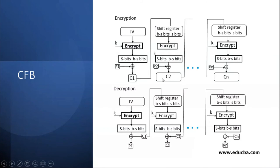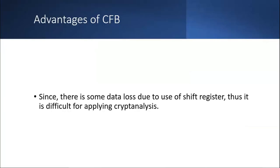The reverse happens in decryption. An advantage of CFB is that there is data loss due to the use of the shift register, making it difficult to apply cryptanalysis. Since it is a normal shift (not circular), there is data loss at every iteration, causing the value to change each time. Because this changed value is used for each block, cryptanalysis attacks become harder on CFB.